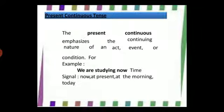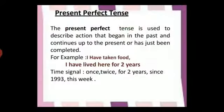Present perfect tense is used to describe an action that began in the past and continues up to the present, or has just been completed. It denotes actions whose effect remains up to the present. For example: 'I have taken food' and 'I have lived here for two years.'